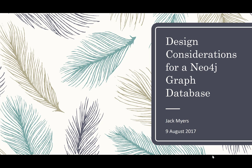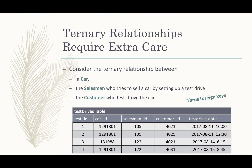Welcome to part two of design considerations for a Neo4j graph database. There are a couple of things I want to talk about with design of Neo4j databases, and one of them is ternary relationships.